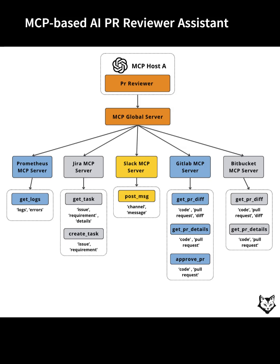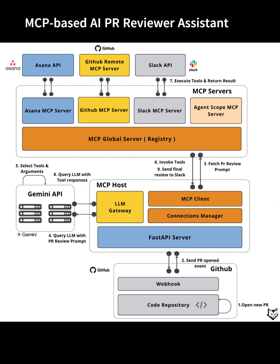The LLM uses this context to generate a concise review, which is posted to the Slack MCP server for team access. Integration and implementation: Each component — host, global server, and MCP servers for GitHub, Slack, Asana, and agent scope — is implemented as a FastAPI microservice, maintaining clean interfaces and isolated authentication via OAuth tokens.